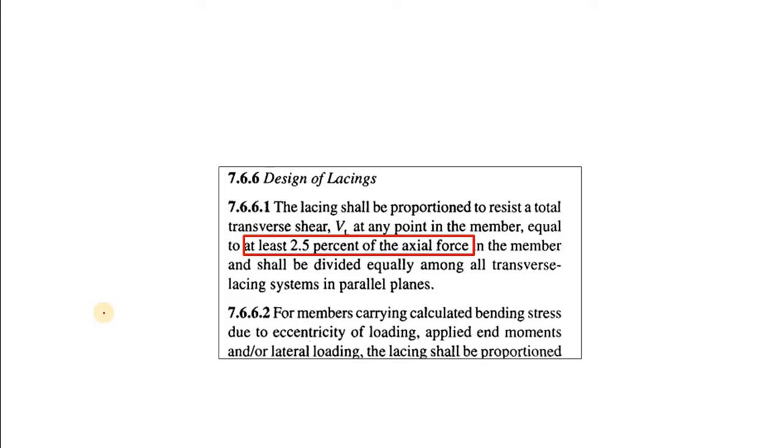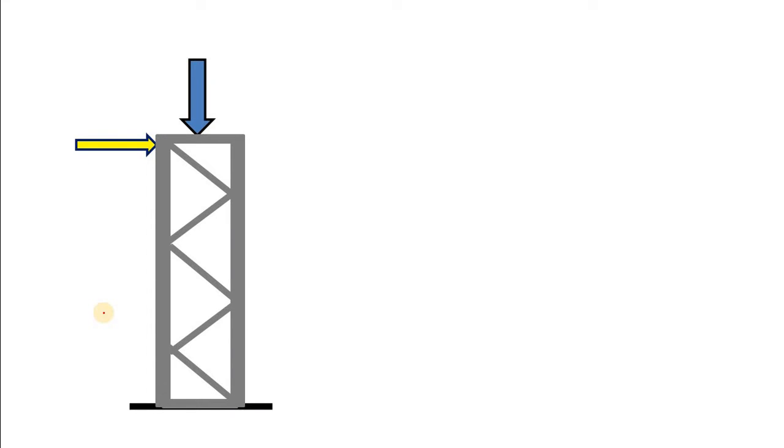For example, in IS 800, this shear force is only 0.025 times the axial load P. Now, why are lacing or batten affected by this shear force? First, consider a lacing system. Here, compressive load is carried by this vertical component, but who will carry the shear? Yes, the lacing.